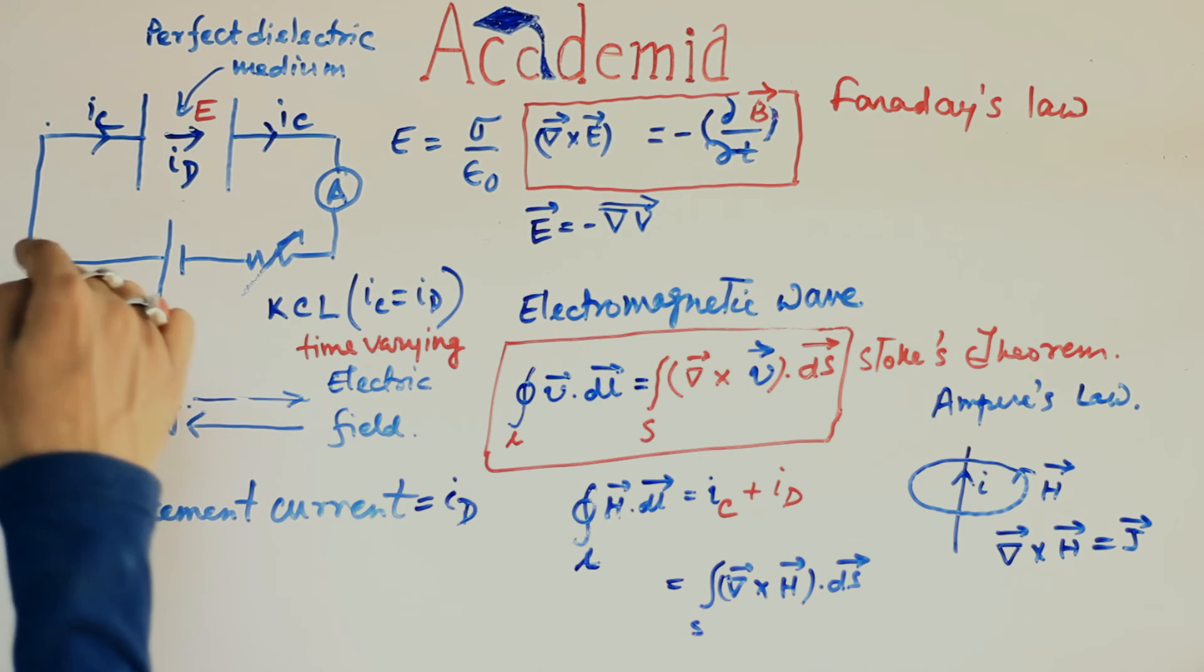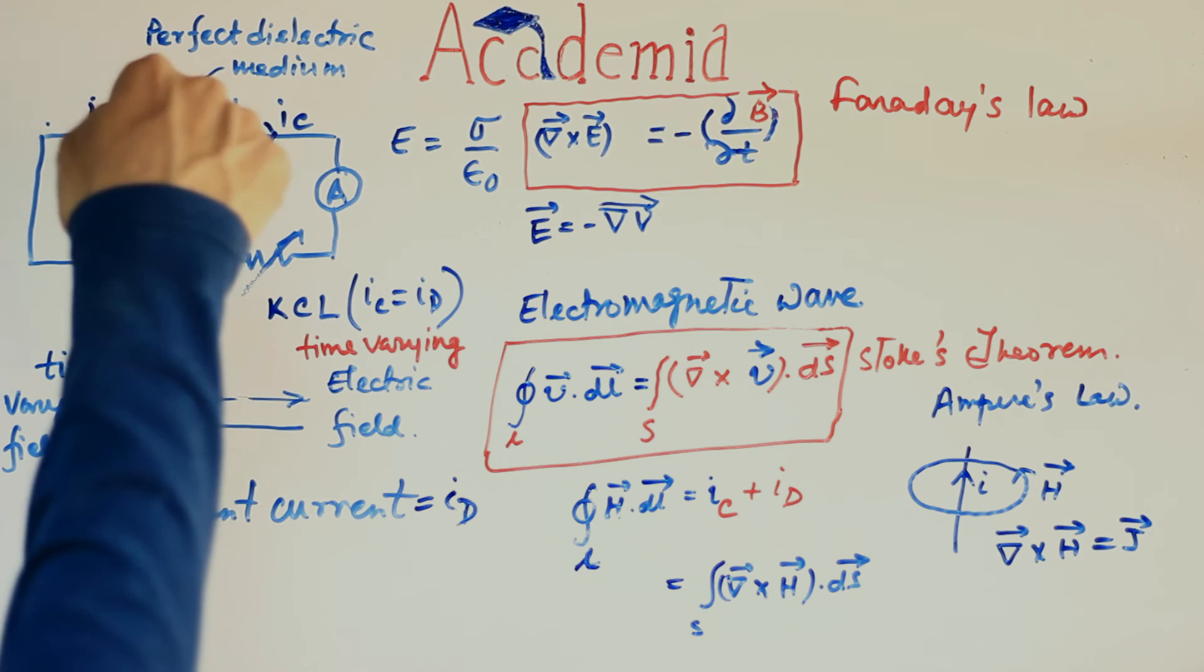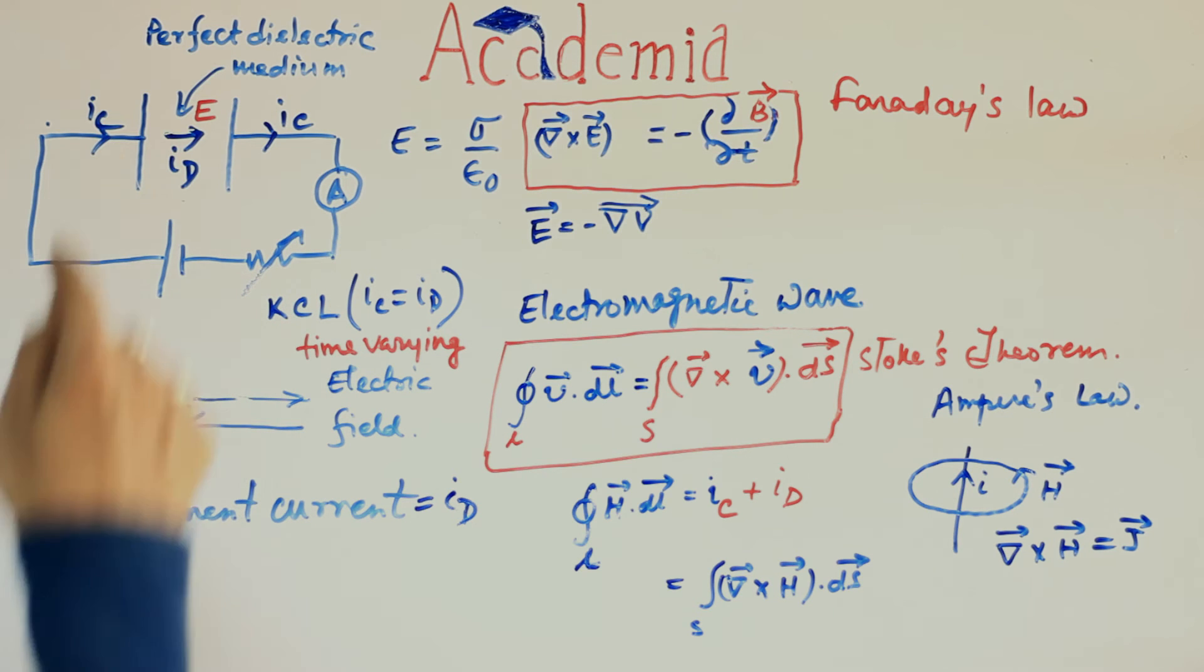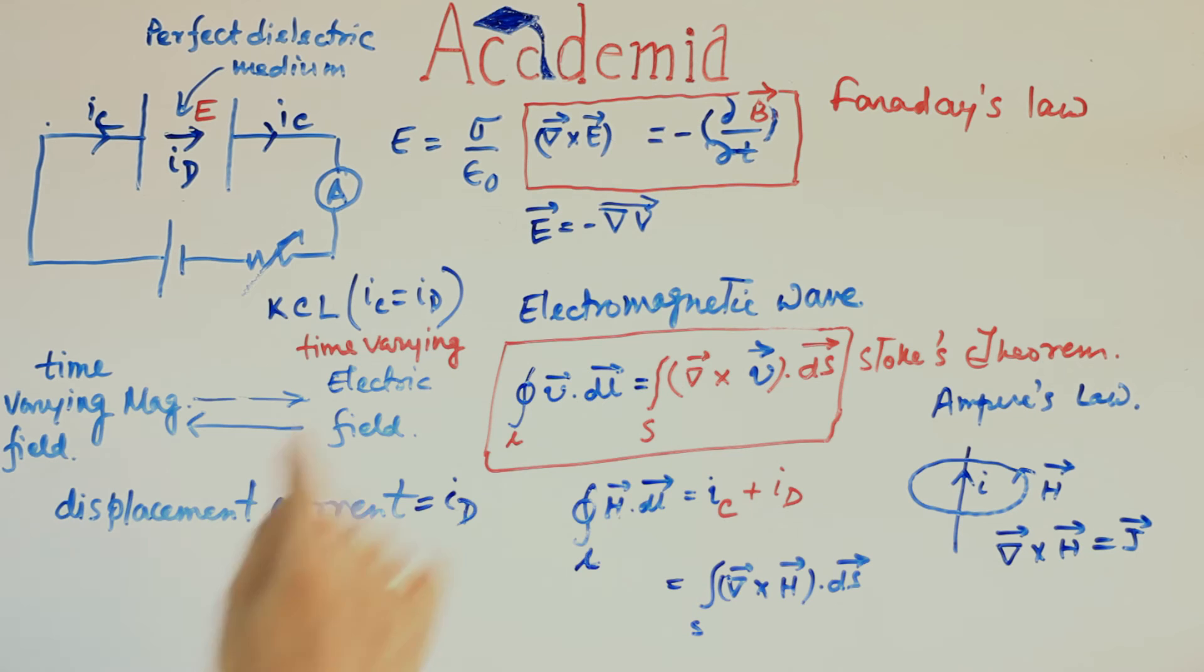When the current through this wire is concerned, ID is 0. So, it is IC only. When this dielectric space is concerned, IC is 0. So, it is ID only. And we know IC is equal to ID.